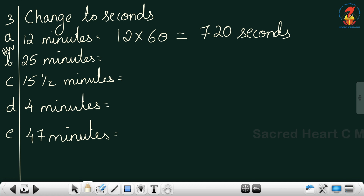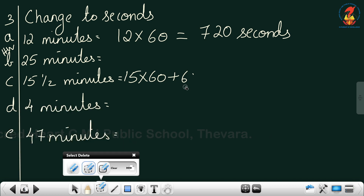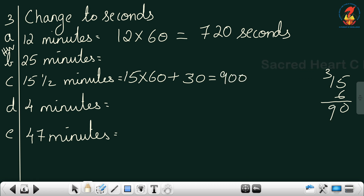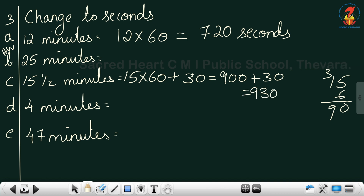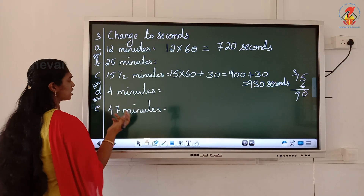Question C: 15 and a half minutes. 15 you convert to seconds by multiplying with 60. Half a minute — since 1 minute is 60 seconds, half minute is 30 seconds. 15 into 60: find 15 into 6, which is 90, so you get 900 plus 30. The final answer is 930 seconds. Questions D and E you can do as homework — just multiply by 60.